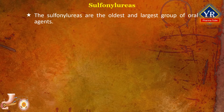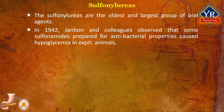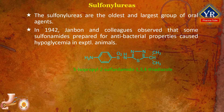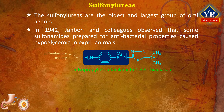Sulfonylureas. The sulfonylureas are the oldest and largest group of oral agents. The discovery of sulfonylureas as oral hypoglycemic agents was made accidentally. In 1942, M. John Bon and colleagues observed that some sulfonylureas prepared for antibacterial properties caused hypoglycemia in experimental animals. One such compound was 5-isopropyl-2-sulfonylamido-1,3,4-thiadiazole. This is a sulfonylurea derivative since it possesses a para-aminobenzene sulfonylurea moiety in its structure. Thus, the sulfonylureas are chemically related to sulfonamide antibacterial drugs.